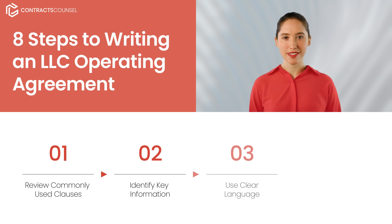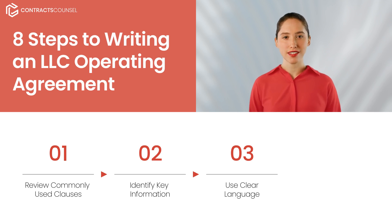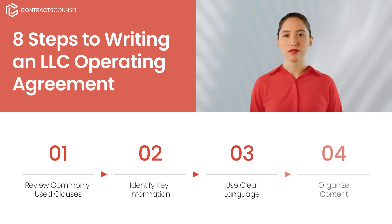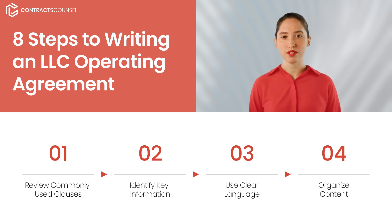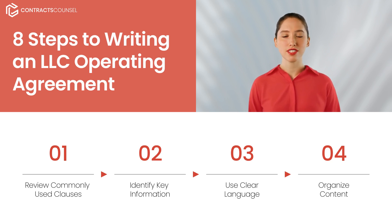3. It is critical to use clear and concise language that all members can understand. 4. Once you've written your clauses, organize them so that they are logical. For example, you likely want to have the management structure section come before the profit and loss allocation section.